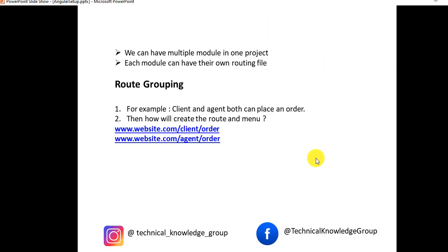We can have multiple modules in one project, and each module can have their own routing file. A module is a logical division of a project. For example, Flipkart can have multiple modules like client, agent, and admin. We can group the routes — for example, client and agent both can place the order, so the order component will exist in both. The URL would be client/order and agent/order respectively. We'll see how to group routes when the component name is the same across multiple modules.